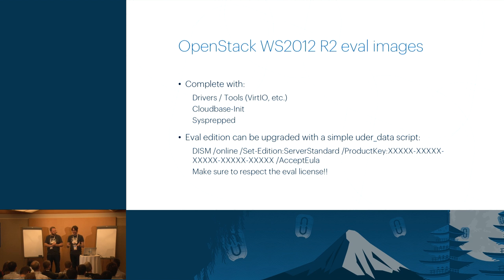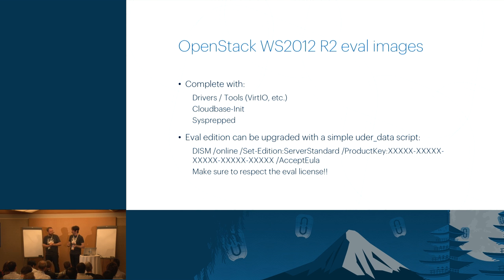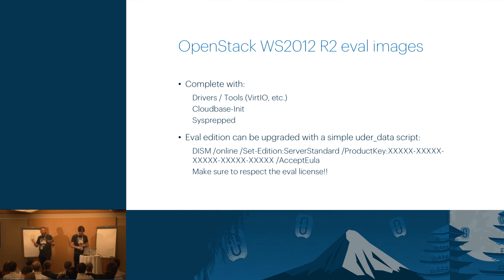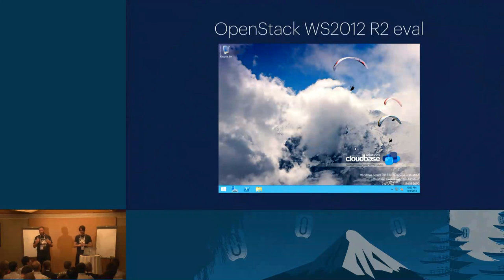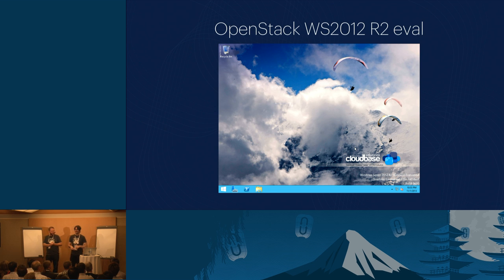The limitation with the license is simply due to Microsoft requiring that you accept it before allowing us to let you download those images. We are probably the only company ever to have done this. It happened in Portland — that was the first Windows cloud appliance, fully baked for OpenStack.